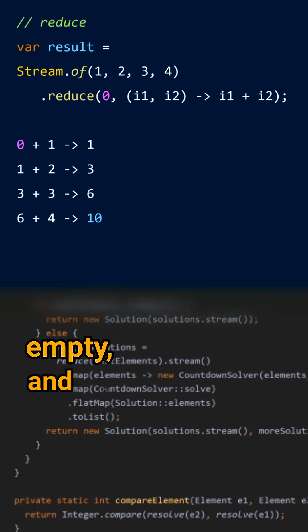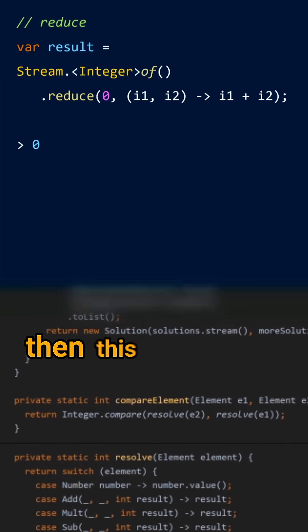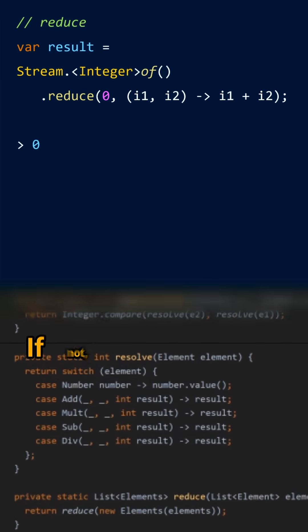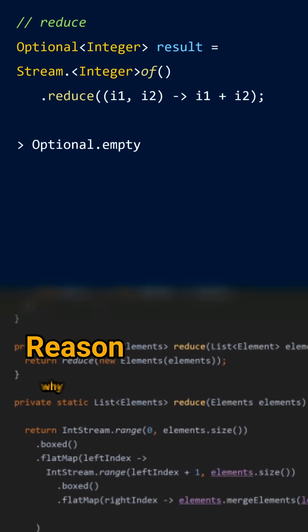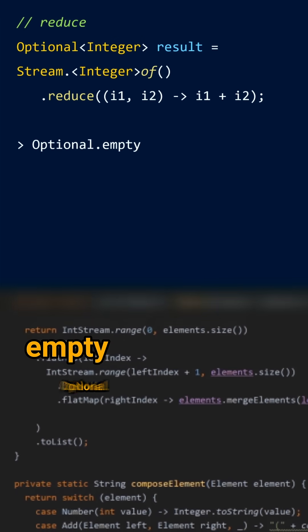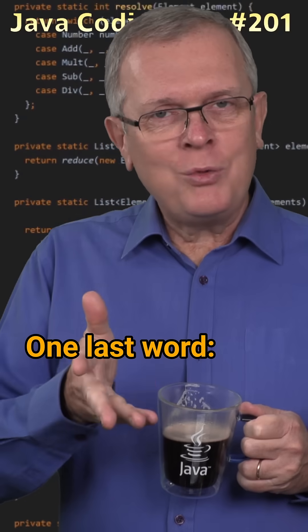If your stream is empty and you gave an identity element, then this element is returned. If not, then the reduction is undefined, which is why the reduction is an empty optional.